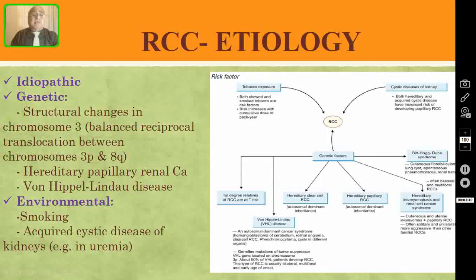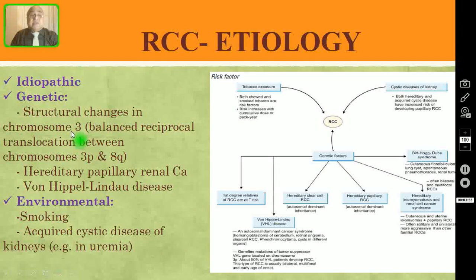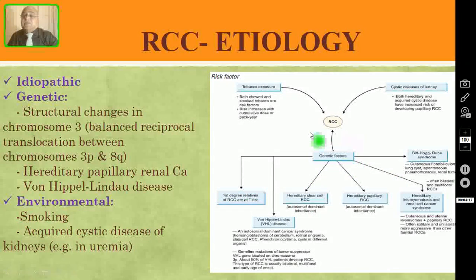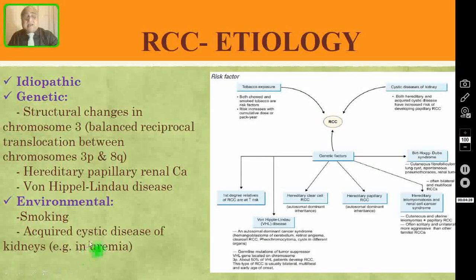Coming to the etiology, it is mainly idiopathic — the exact cause is not known. There are many genetic factors involved, especially structural changes in chromosome 3, specifically the balanced reciprocal translocation between chromosomes 3P and 8Q. Hereditary papillary renal carcinoma, Von Hippel-Lindau disease, and Birt-Hogg-Dubé syndrome are also genetic causes for RCC. Environmental factors include tobacco exposure or smoking. Both inherited and acquired cystic disease of the kidneys can also cause RCC.